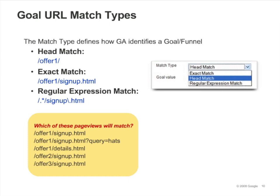Here's another example illustrated on this slide. If you want every page in a subdirectory to be counted as a goal, you could enter the subdirectory as the goal and select head match. Exact match means that the URL of the page visited must exactly match what you enter for the goal URL. In contrast to head match, which can match every page in a subdirectory, exact match can only be used to match one single page. Also notice that exact match does not match a page view with an extra query parameter at the end.